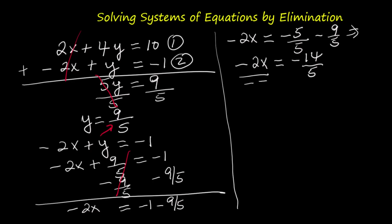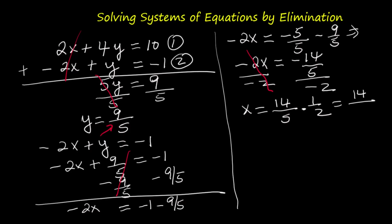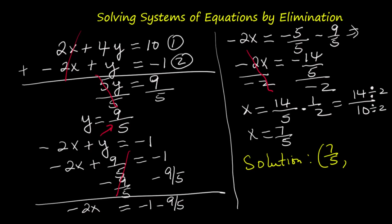Divide both sides by negative 2. The negatives cancel out and we're left with x equals 14 over 5 divided by 2. To divide a fraction by a number, keep the fraction and multiply by the reciprocal. So x equals 14 over 5 times 1 half. 14 times 1 is 14, 5 times 2 is 10, so x equals 14 over 10. Simplify by dividing top and bottom by 2: x equals 7 over 5. So the solution to the system is the ordered pair 7 over 5 comma 9 over 5.